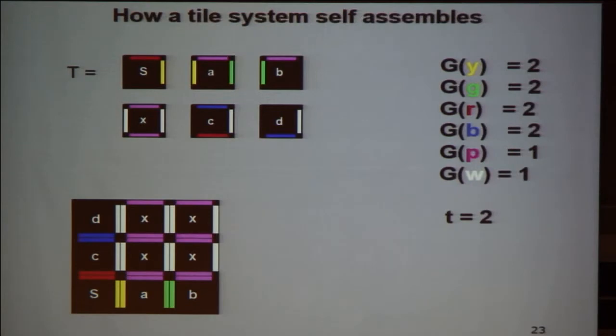This would constitute a solution to the problem of building a three by three square. This is a six tile solution. By our definition, we can build a three by three square with six tiles. Now, you can ask yourself, can we do it with five? Can we do it with four? What's the true complexity? More generally, we're going to ask, asymptotically, for very big n by n square, hundred by hundred, thousand by thousand square, what is the complexity of building that square? Do we need a thousand tiles? Do we need a thousand squared tiles?